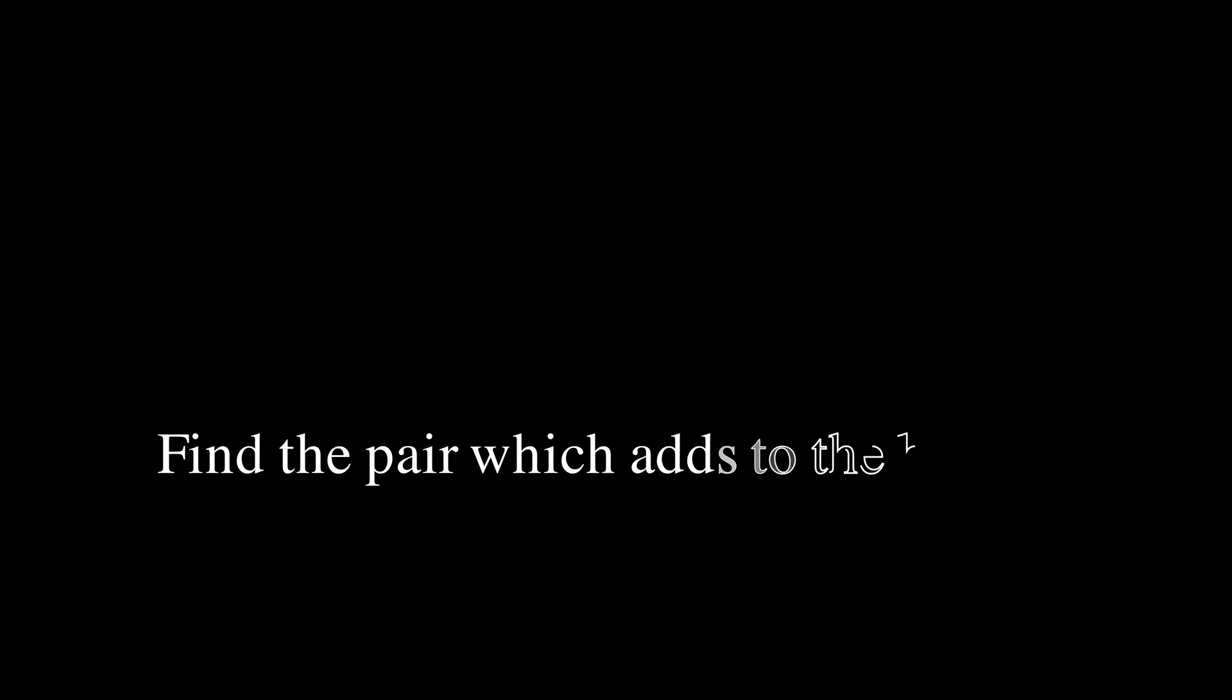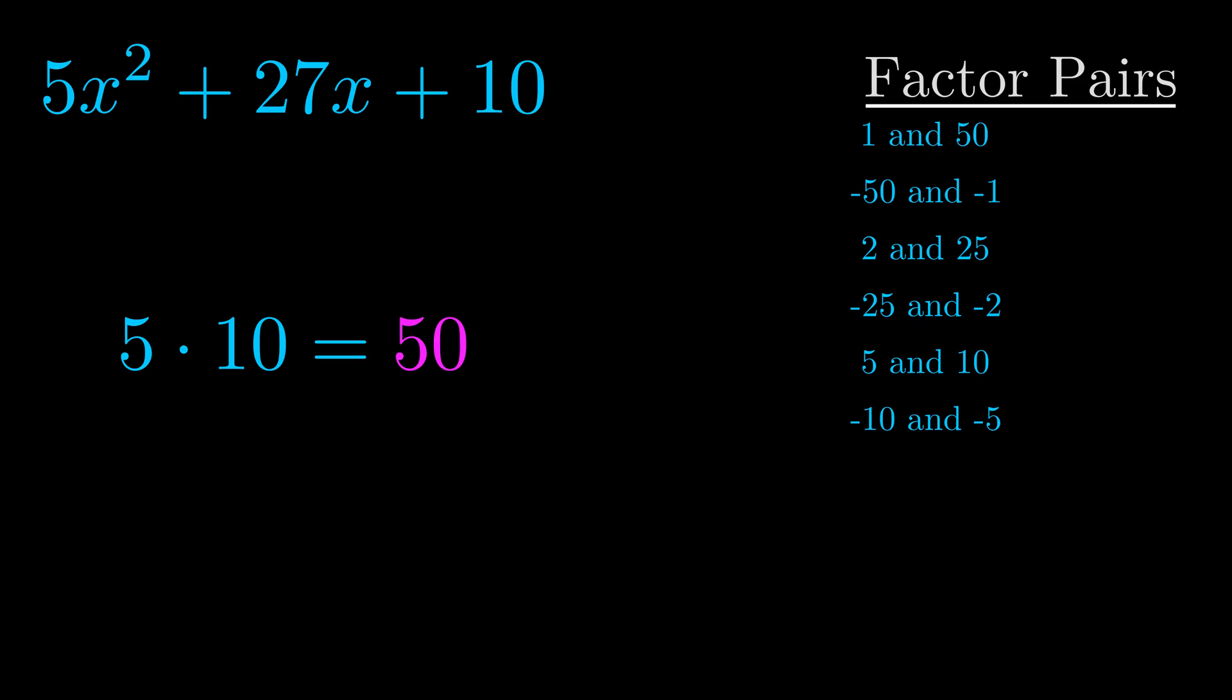The b value is the coefficient on the x term. That's the middle term, the one that we haven't done anything with yet. And really this is the only factor pair that we need.